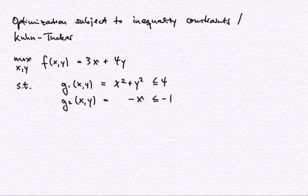Let's start with this example where we have a maximization problem for a linear objective function 3x plus 4y, such that two constraints be satisfied. One is that the vector of choice variables x and y has length less than or equal to 2, meaning x² plus y² is less than or equal to 4. The second constraint is that minus x be less than or equal to minus 1, which is standard form for x greater than or equal to 1.